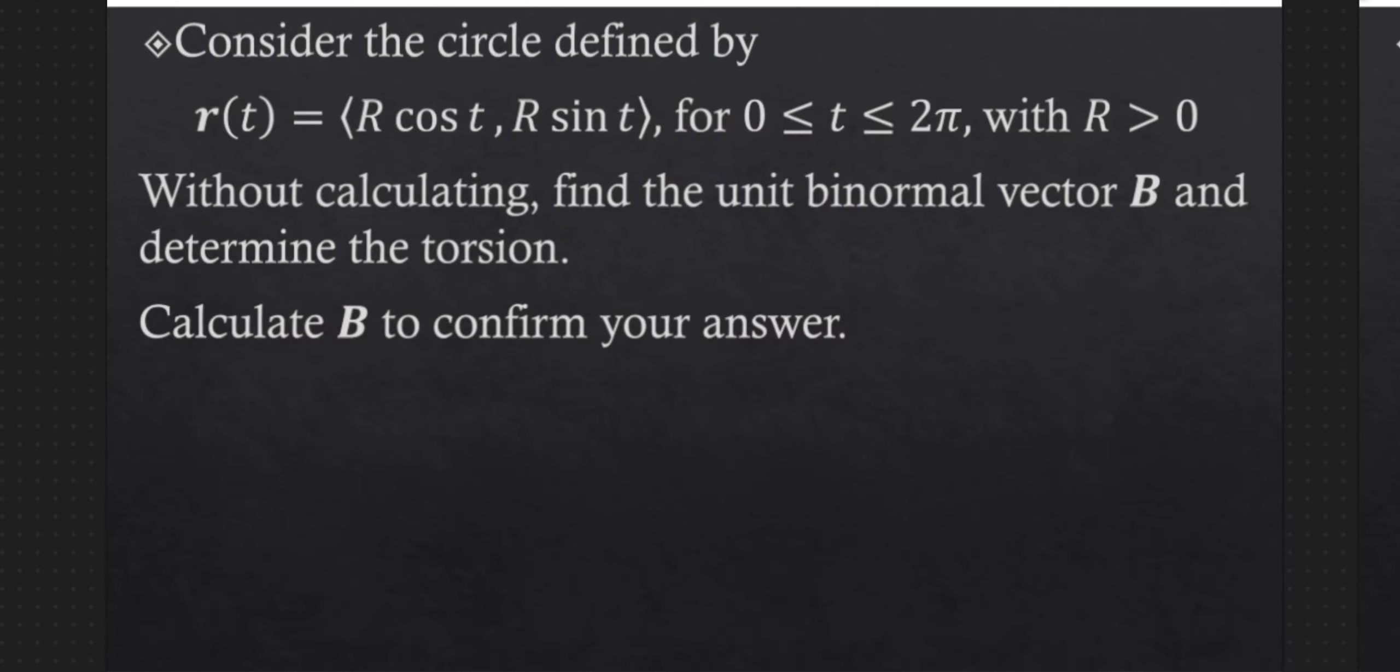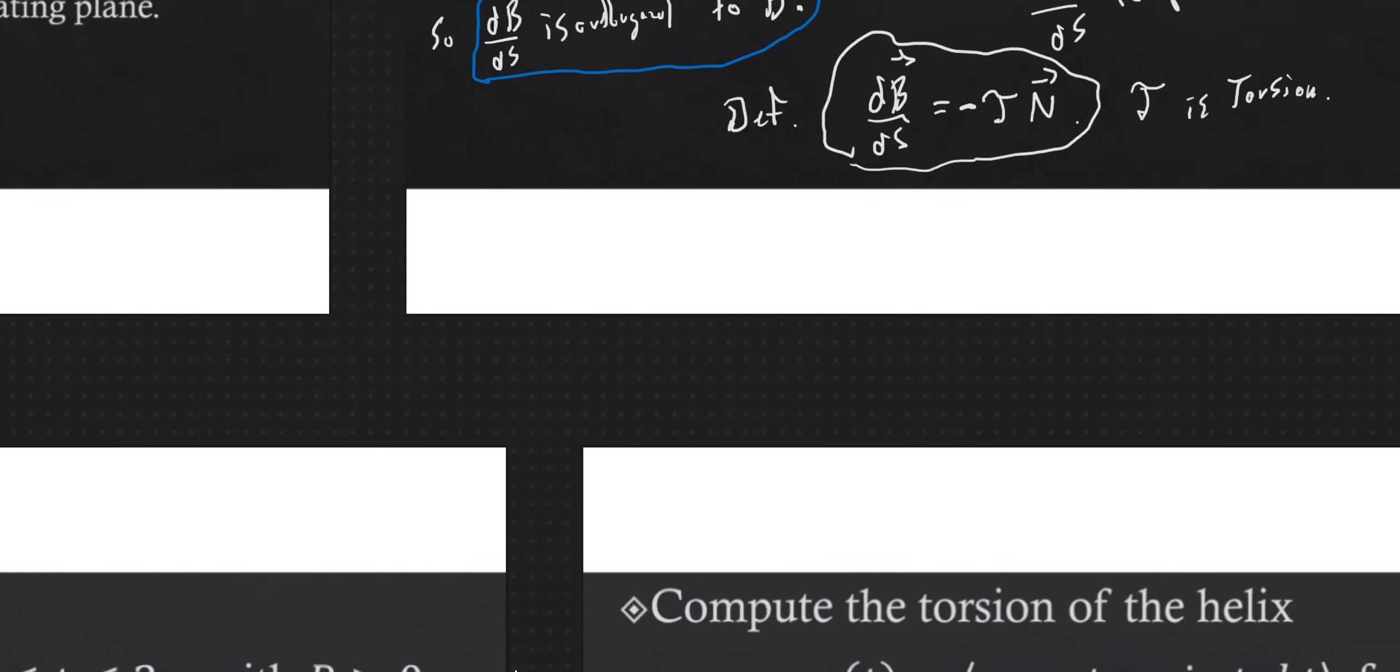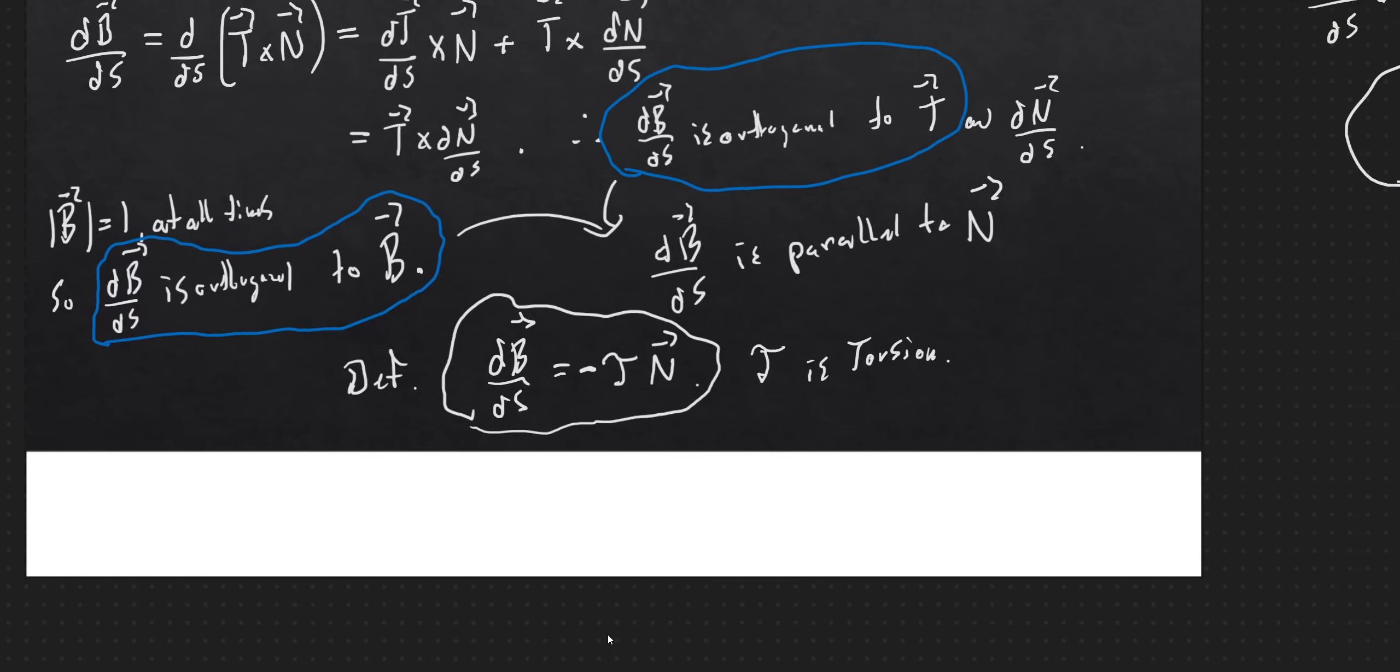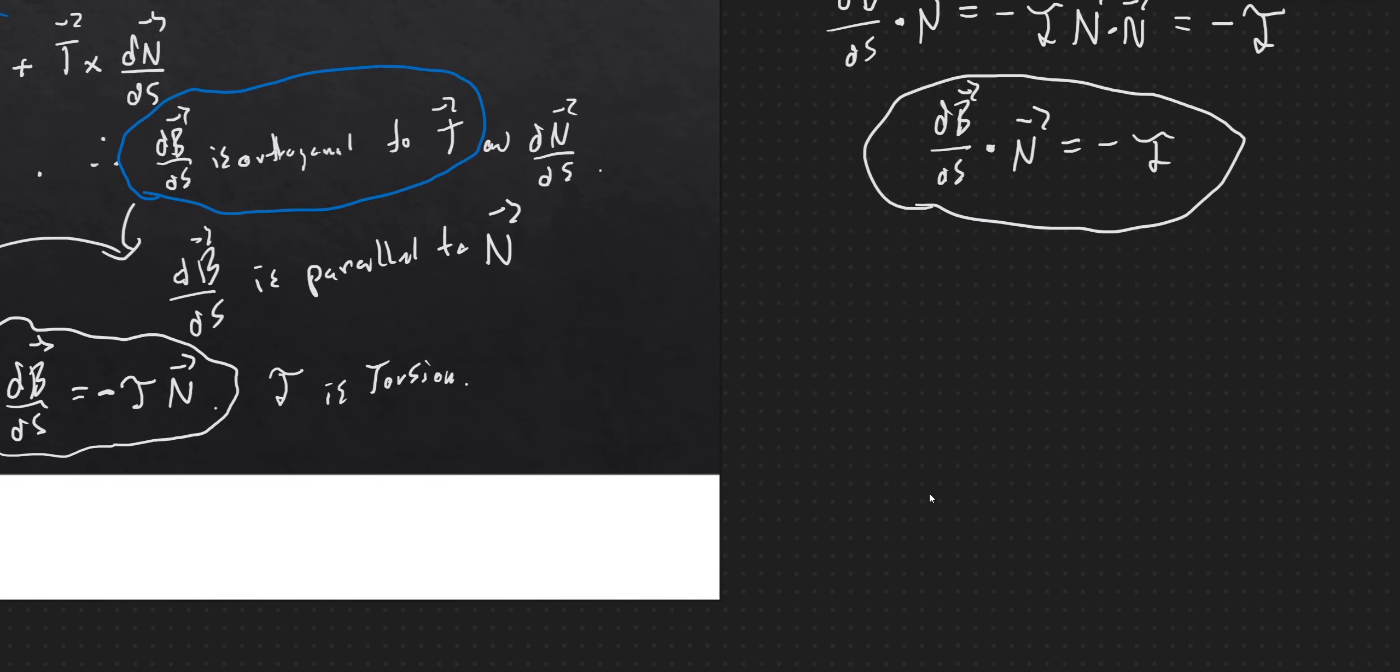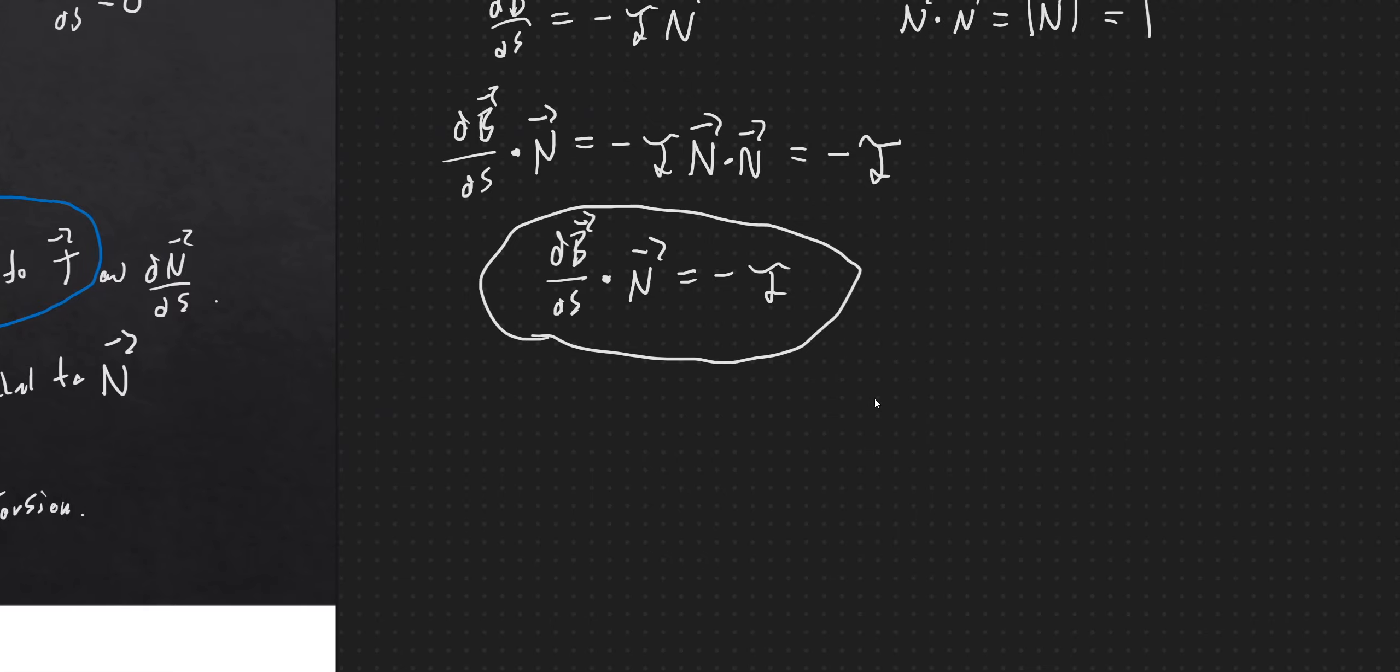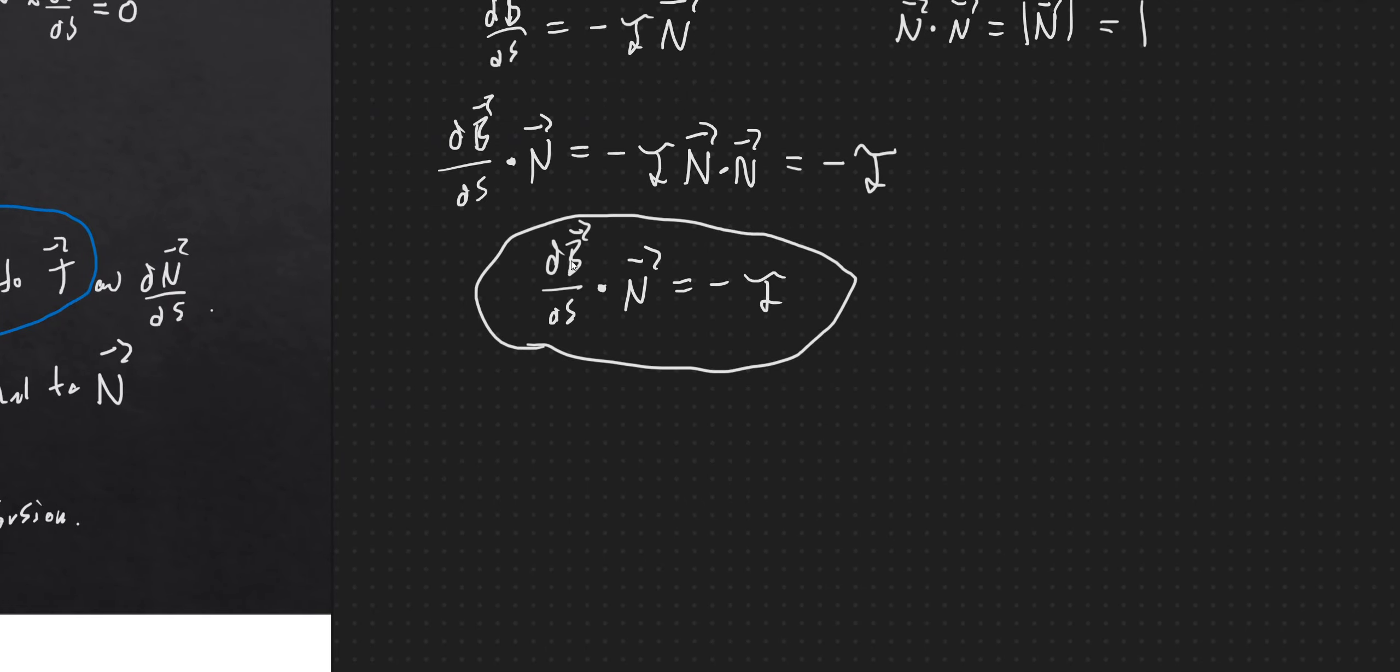And then let's go ahead and calculate this. So keep that prediction you have in mind while we calculate b and the torsion. So remember that torsion, we have this formula for torsion: it's db/ds dot n gives us negative torsion.